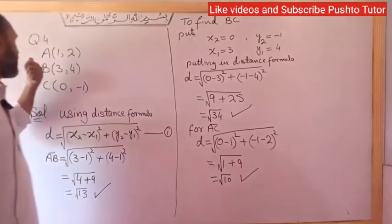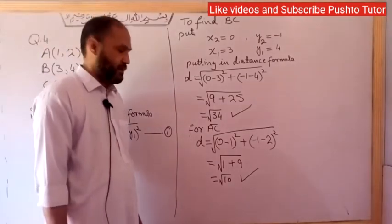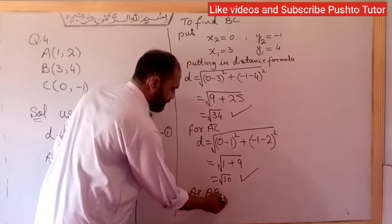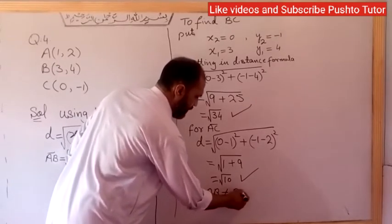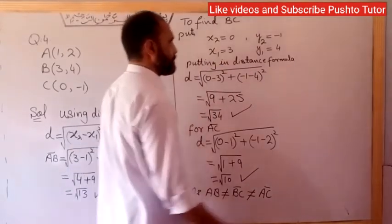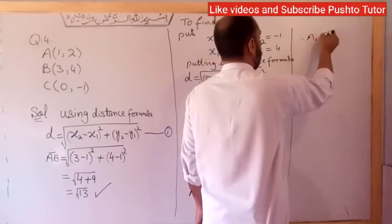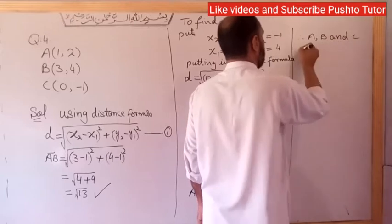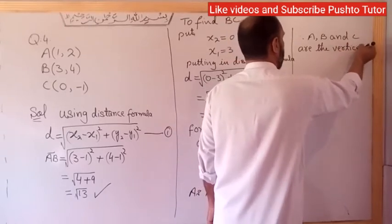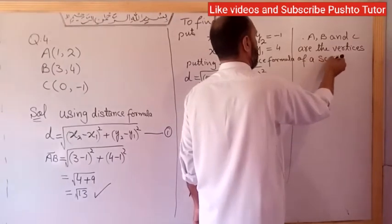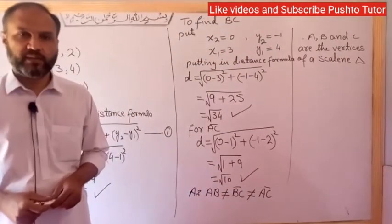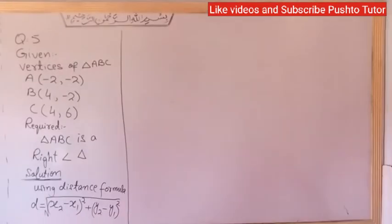Since the distances are all different, these are the vertices of a scalene triangle. AB is not equal to BC and BC is not equal to AC. Therefore A, B, and C are the vertices of a scalene triangle.